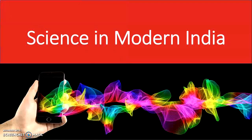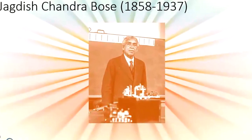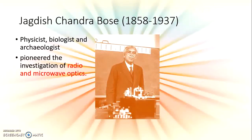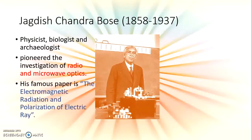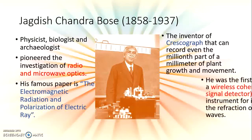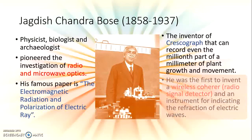The tradition continues to modern India. Let us talk about some modern Indian scientists who have placed us on the world map. Sir Jagdish Chandra Bose was a physicist, biologist, and archaeologist who pioneered the investigation of radio and microwave optics. His famous paper was on electromagnetic radiation and polarization of electric rays. He invented the crescograph, which can record even the millionth part of a millimeter of plant growth and movement, and he was the first to invent a wireless coherer radio signal detector and an instrument for indicating the refraction of electric waves.